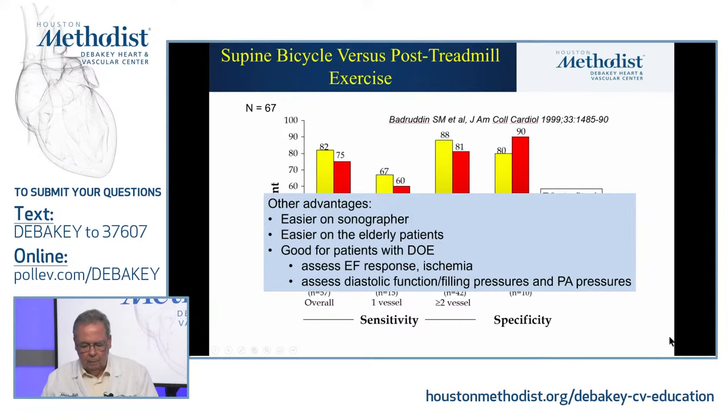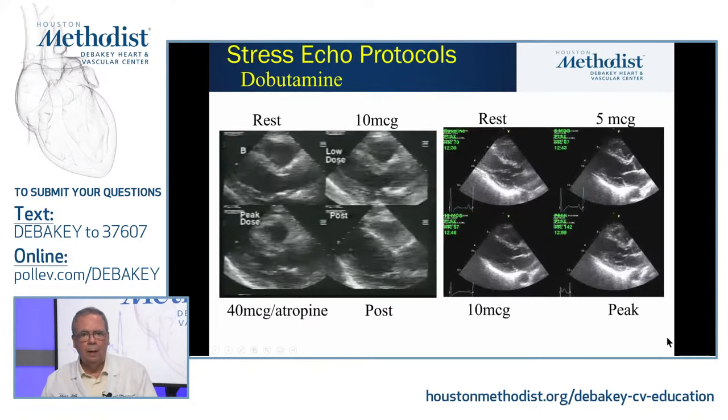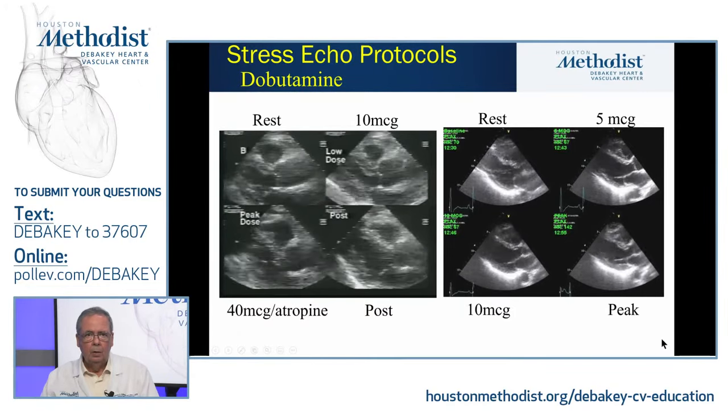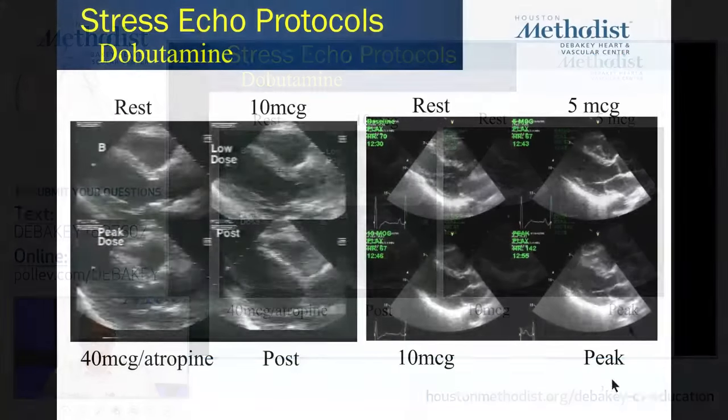The bike is a very good alternative to the treadmill. One big advantage is it's easier on the sonographer, it's also easier for elderly patients who feel very secure and are not afraid of falling, and it's good for evaluating patients with dyspnea — you can assess the EF response, look for ischemia, and also assess diastolic function, estimate filling pressures with exercise, and pulmonary artery pressure response. Consider it in your practice.